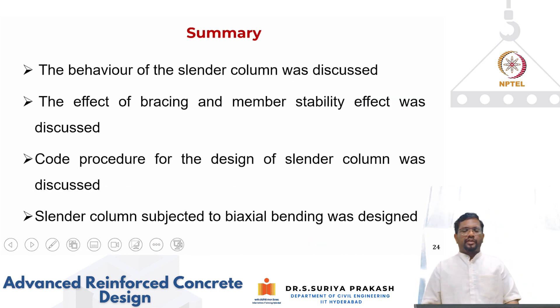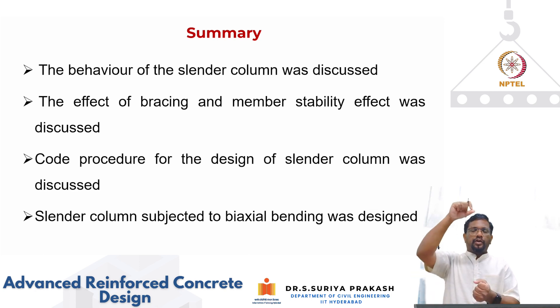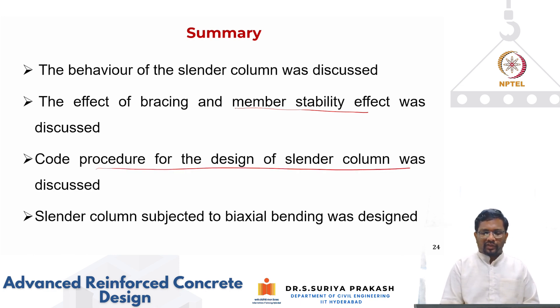So let us summarize this module. We discussed the behavior of slender column. Slender column, moderately slender column design is allowed by the code. For designing a moderately slender column, I have to account for that additional bending moment. And we have seen two effects: the effect of bracing, and member stability effect. When you have an unbraced case, effective length will increase and your columns will move relative to each other. When your column is braced, then you will have only member stability effect. For an unbraced column, you will have both member stability effect and lateral drift effect. And we discussed the code procedure for the design of slender column and we also took one example for a slender column with biaxial bending.